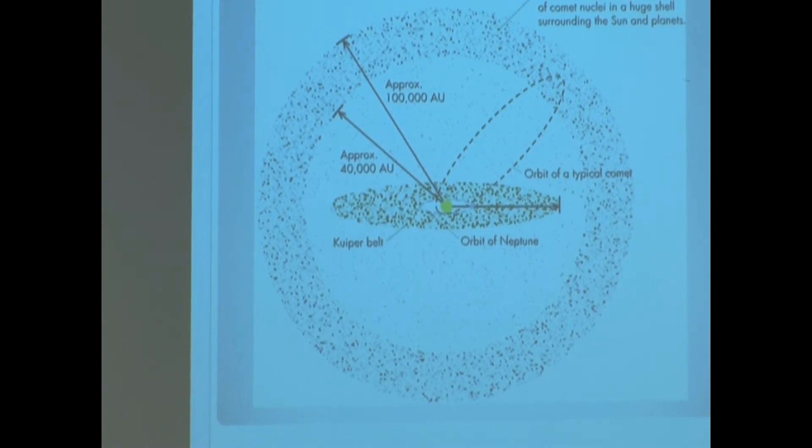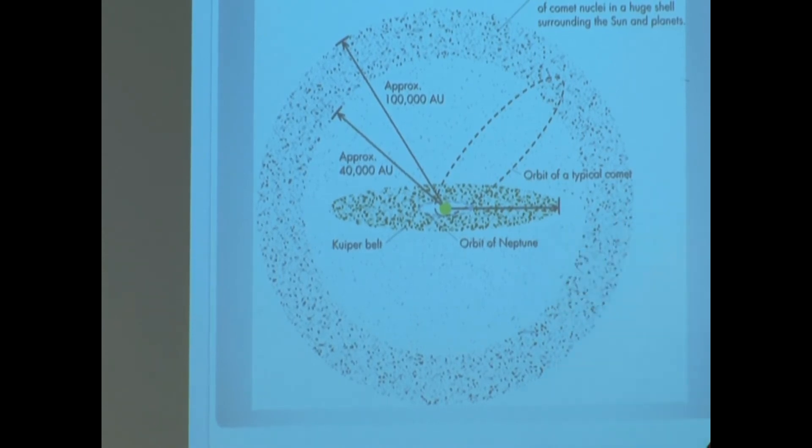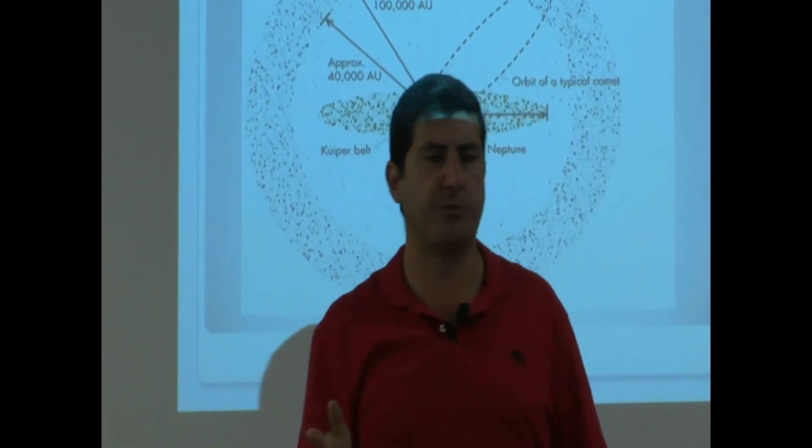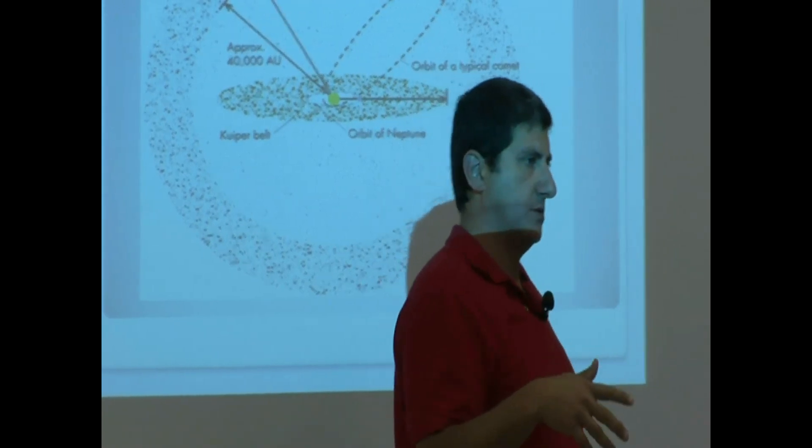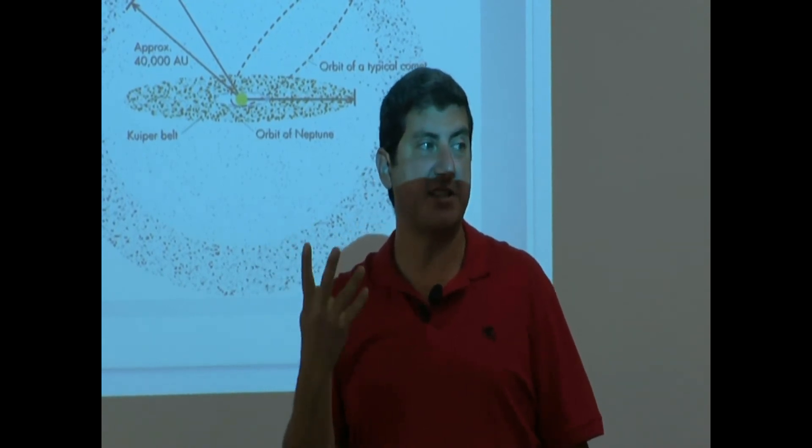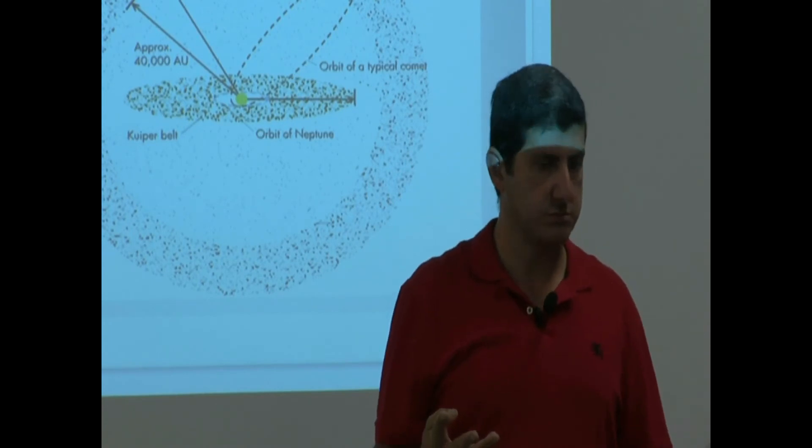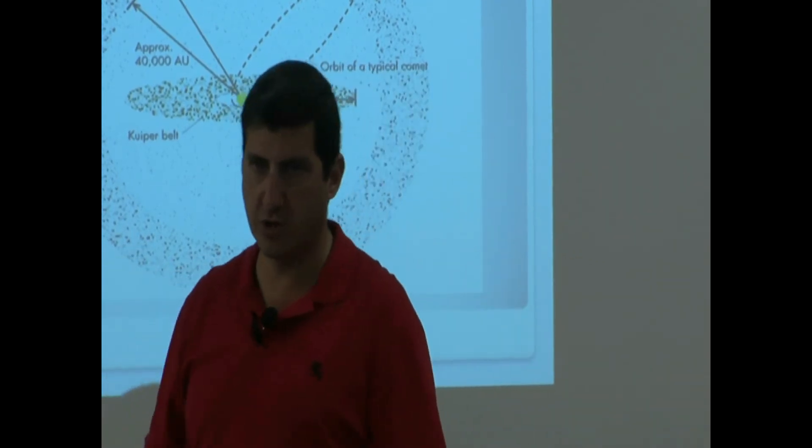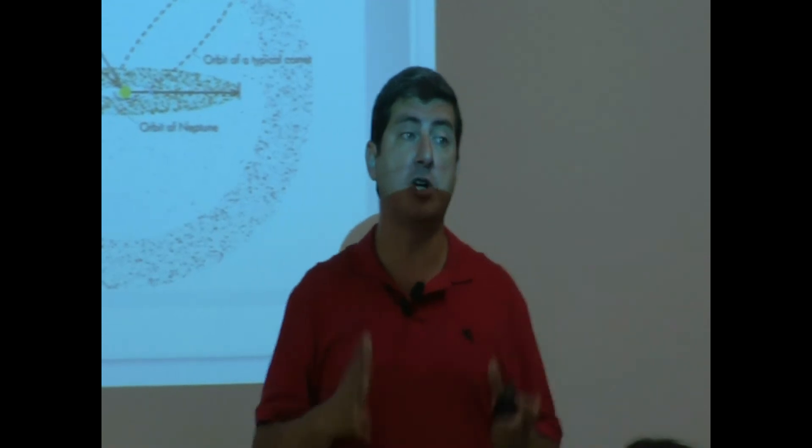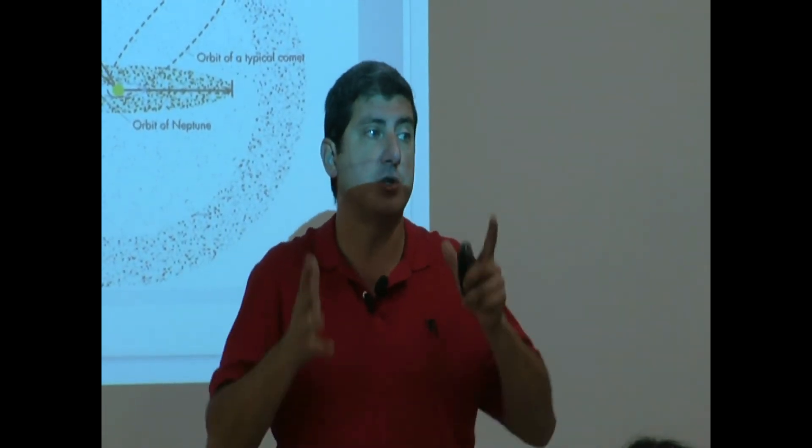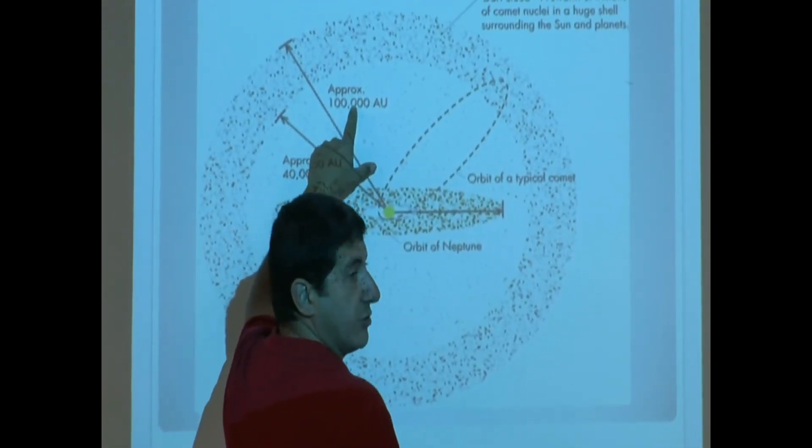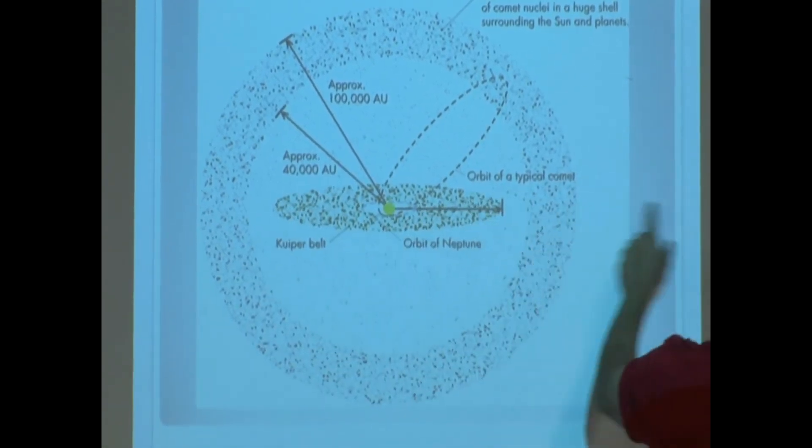By the way, where is our closest star in this picture? Back in Lecture 1, we learned that our closest star is four light years away. Each light year is 63,000 AUs. So 63,000 times four, roughly 240,000 or 250,000 AU. So our closest star is about 250,000 AUs away from the Earth. Where would that bring that? If the distance from here to here is 100,000 AU, 250,000 AU would make it somewhere here.